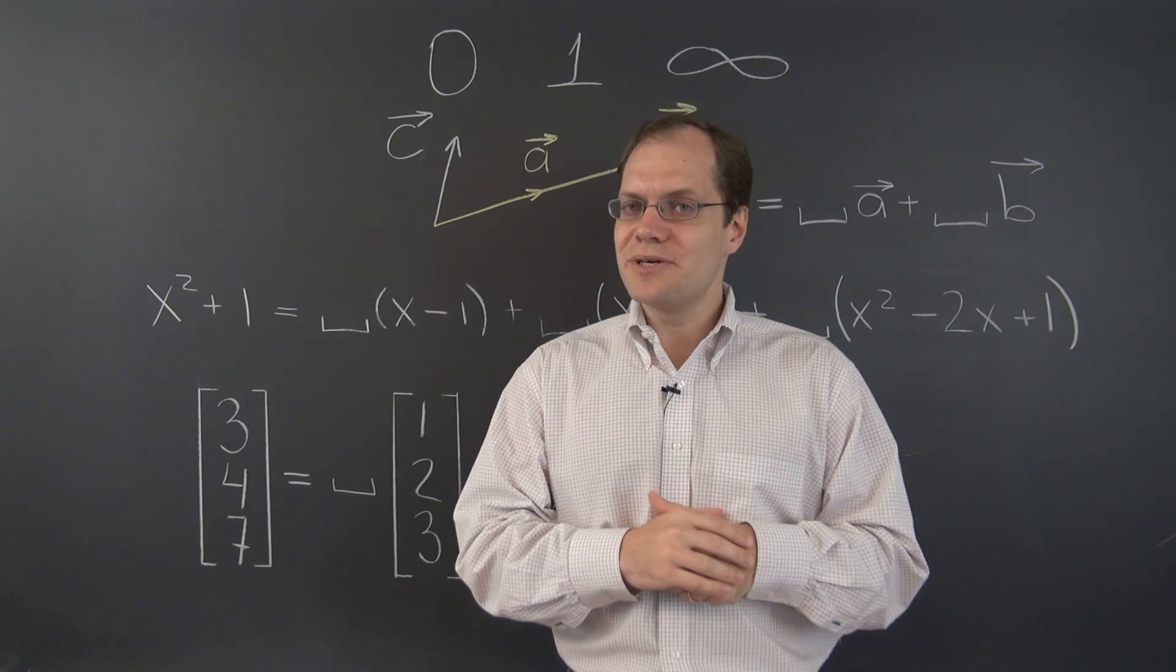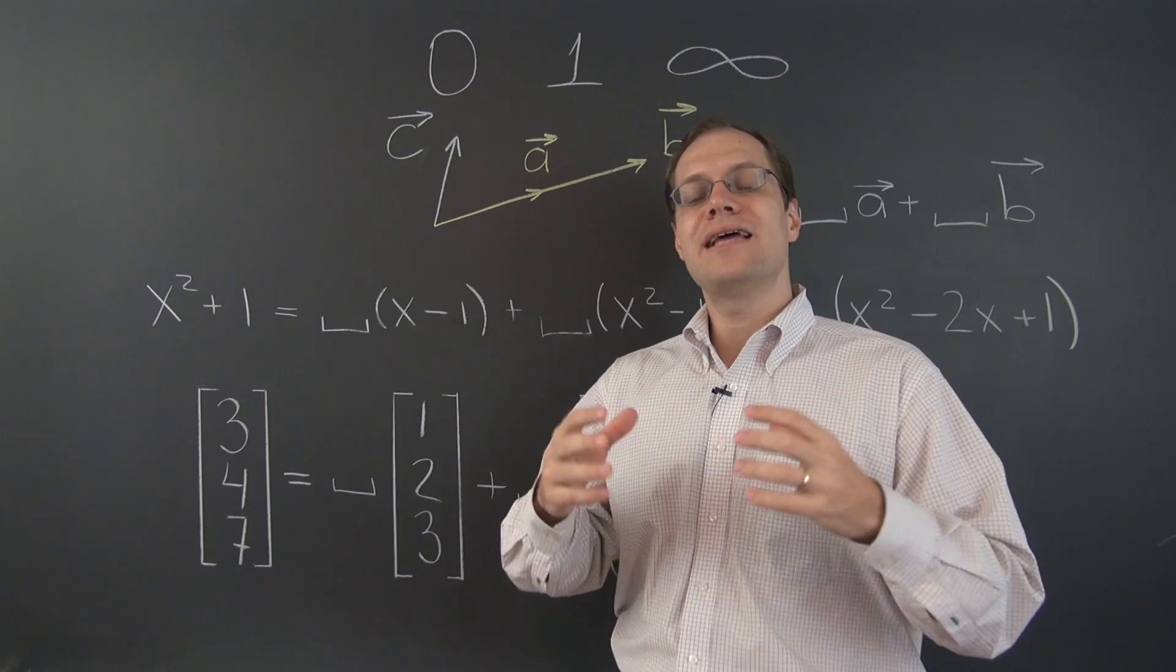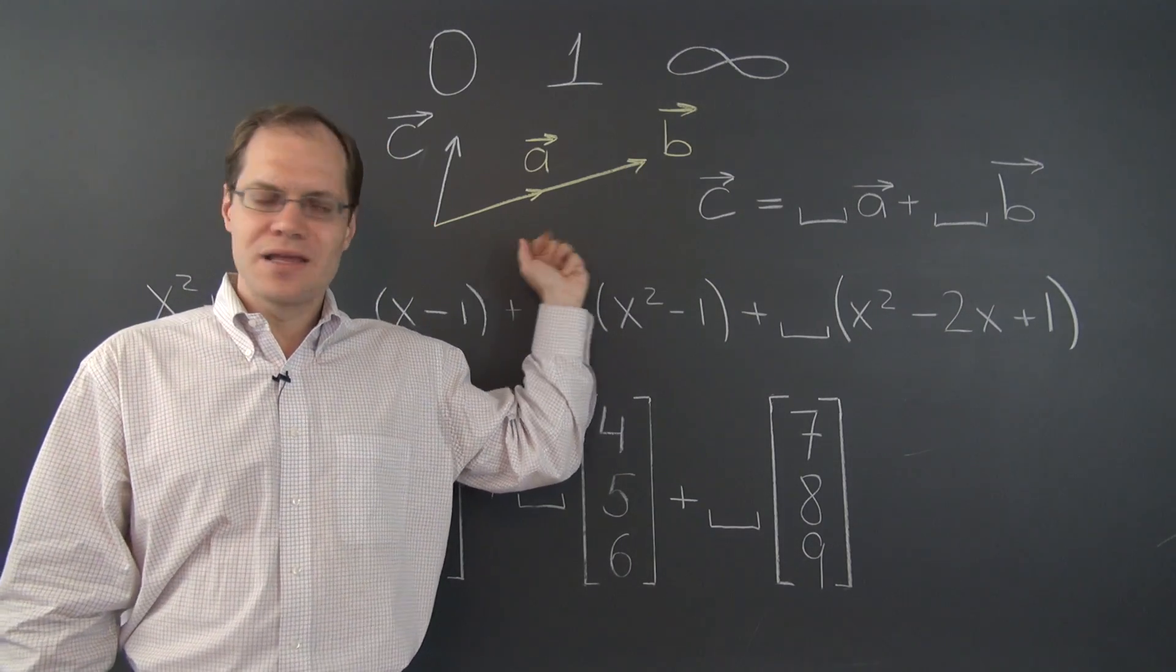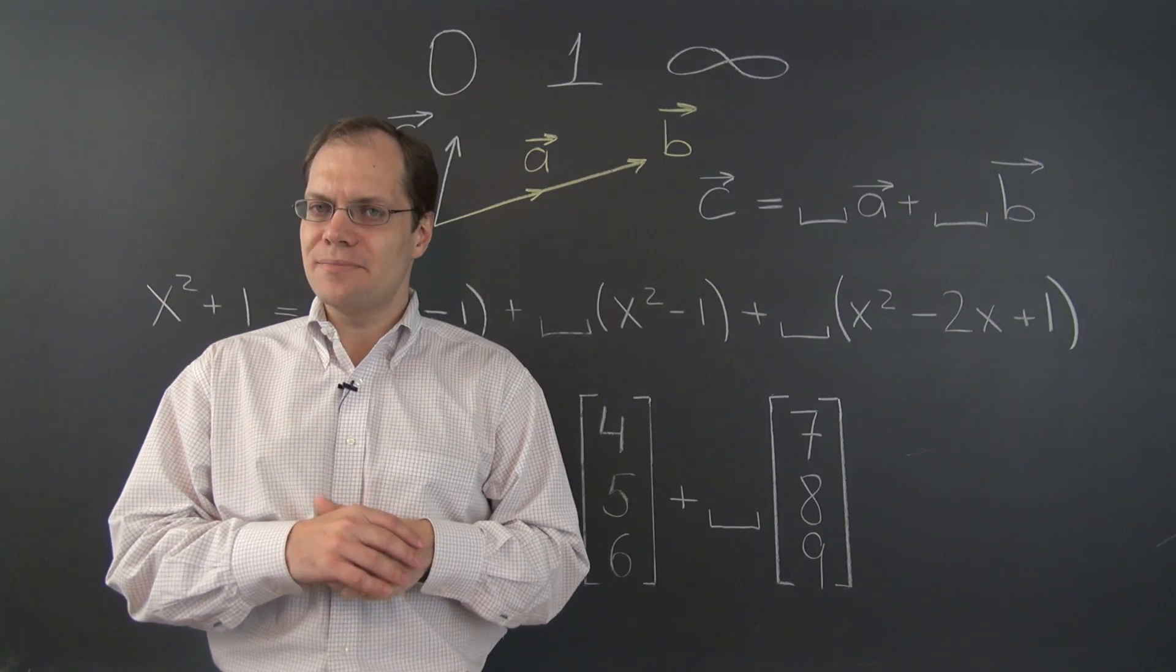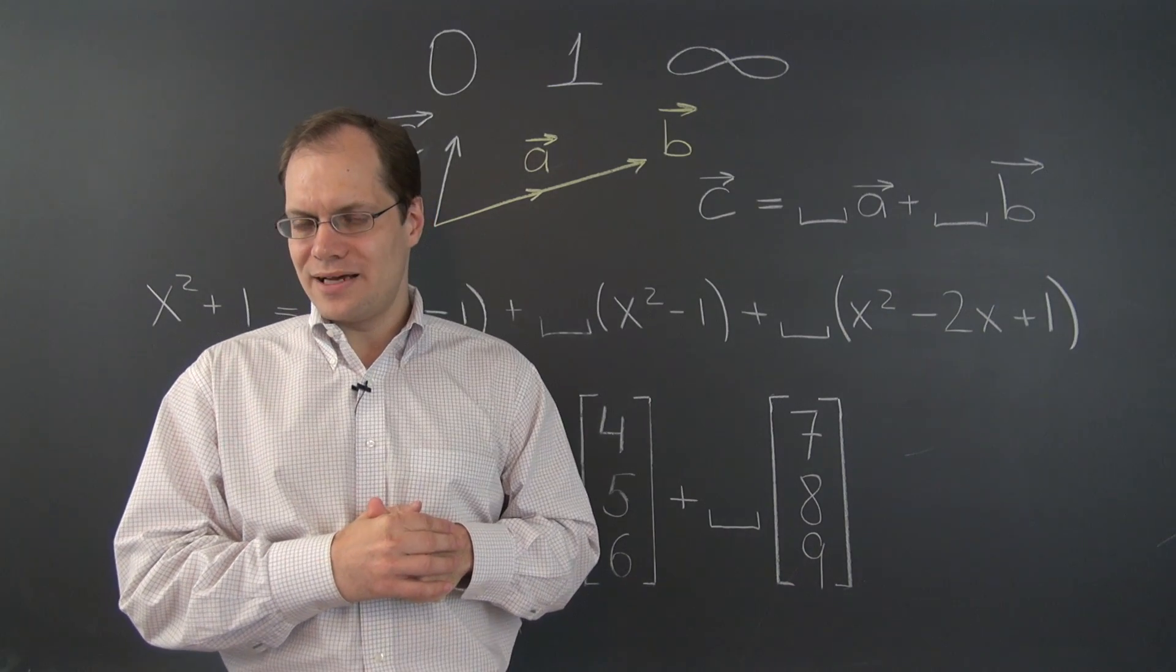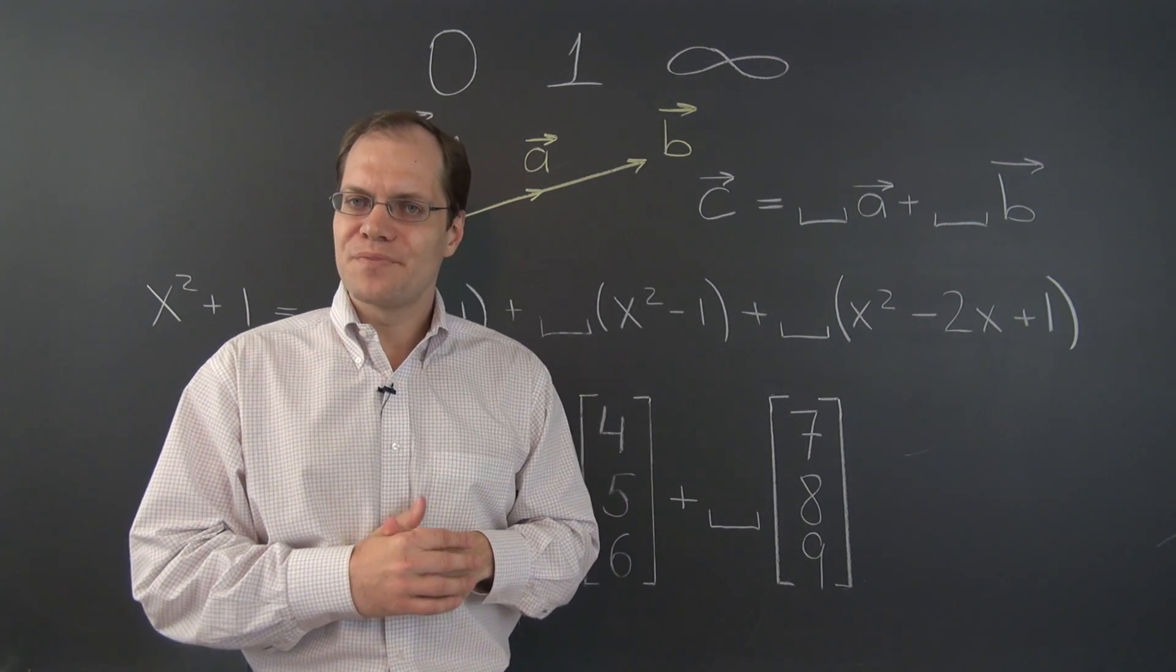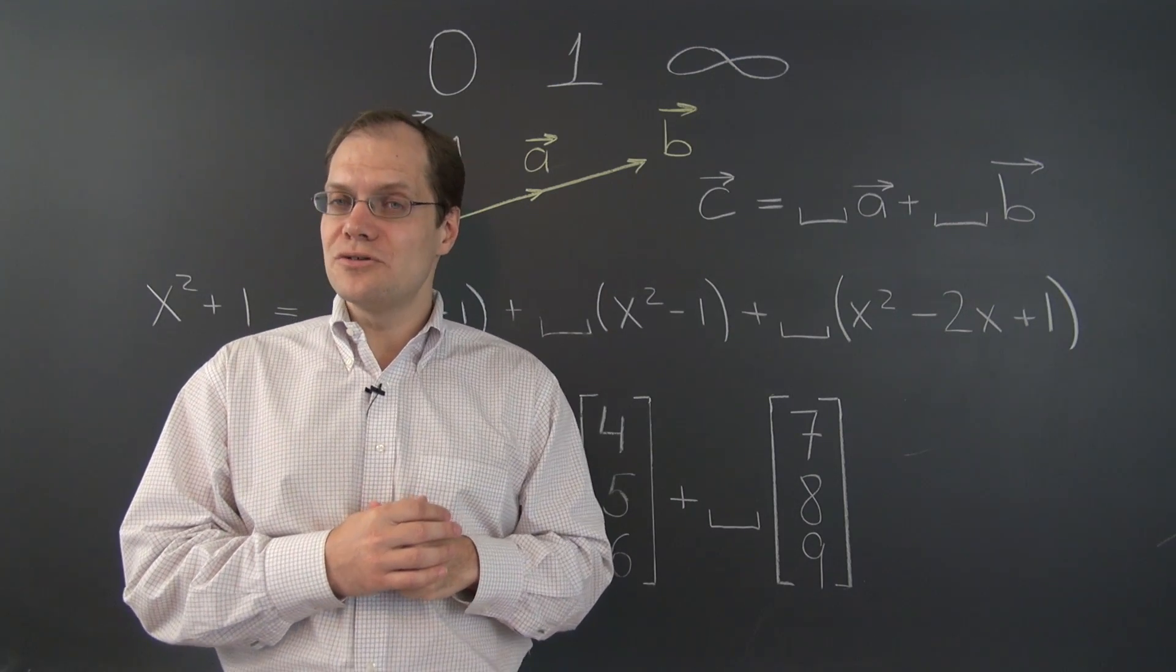As far as geometric vectors are concerned, it's very easy to think of a decomposition problem that's impossible, that doesn't have any solutions. Here it is on the board. Simply make sure that the two vectors A and B point along the same line, and the vector C does not point along the same line. The task is to decompose the target vector C in terms of A and B, and it's abundantly clear that this decomposition problem has no solutions.